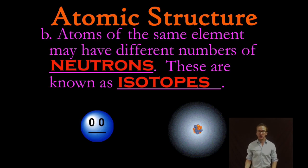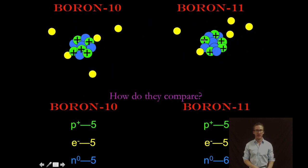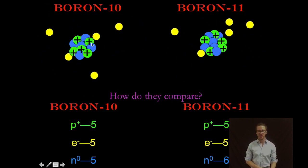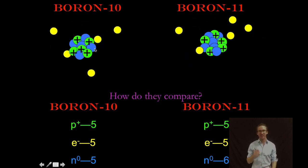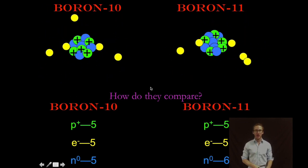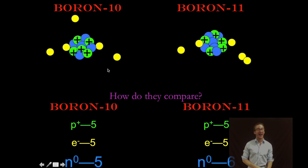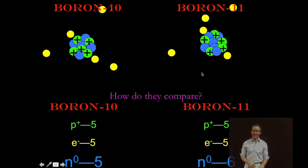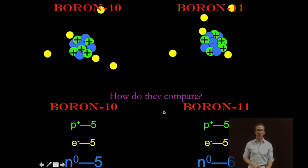Now as we talk about neutrons it's important to know that atoms of the same element may have different numbers of neutrons. These are known as isotopes. So as you take a look at the two atoms on your screen recognize they are both atoms of boron because they have five positive protons and it is the number of protons that we use to identify the element. However notice that they are different isotopes of boron because they have different masses and they have different masses because their number of neutrons are different.